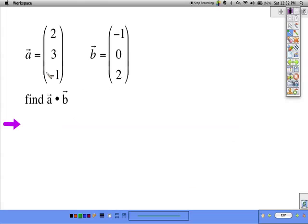So let's find A dot B. Pause the video for a moment and see if you can come up with this dot product. So we take 2 times negative 1, plus 3 times 0, plus negative 1 times 2.